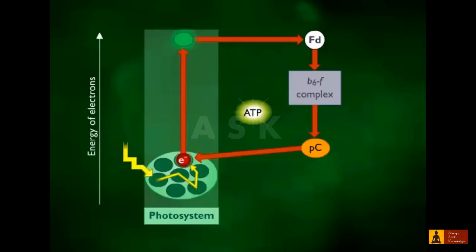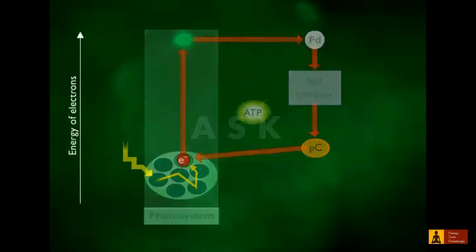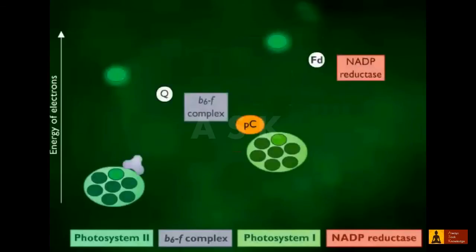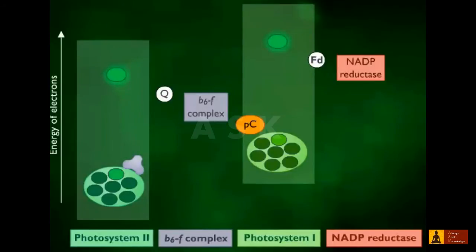The reducing power needed for biosynthesis is not generated in the process of cyclic photophosphorylation. Plants and cyanobacteria utilize two photosystems which work sequentially to produce both energy and reducing power.